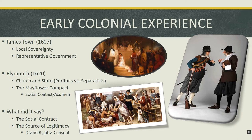Before they disembarked, they had to talk things out, because on the ships they were under maritime law with a clear chain of command. But the captain no longer had authority once they disembarked. So before putting their feet on dry land, they needed to discuss how to protect themselves from anarchy. They gathered on the deck of their flagship, the Mayflower, and signed what is called the Mayflower Compact.